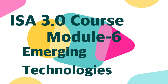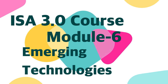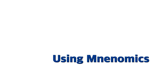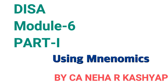Today we are starting with Module 6, which is Emerging Technologies. I have divided this module into three parts. Part one consists of Artificial Intelligence and Blockchain. Part two consists of Cloud Computing and Data Analytics. Part three consists of Internet of Things and Robotic Process Automation. Let's start today with Part 1 of Module 6.